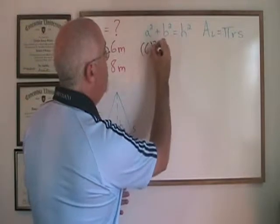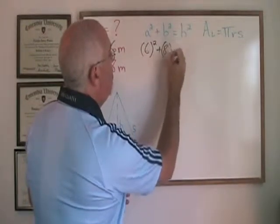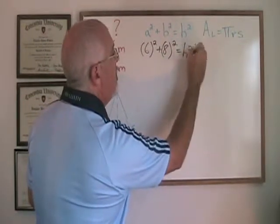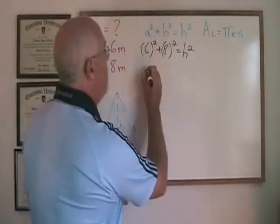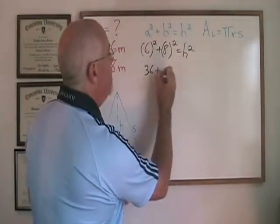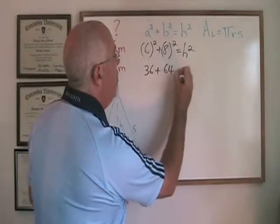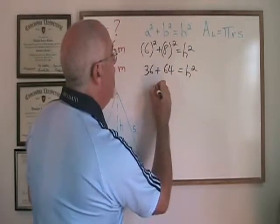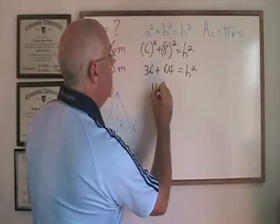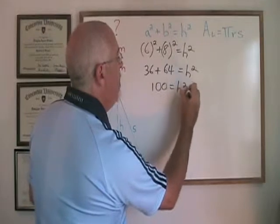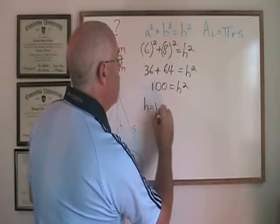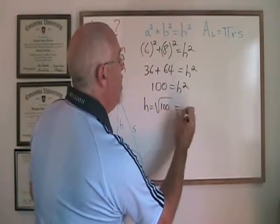So I plug these in and we will solve for the hypotenuse. Six squared is 36. Eight squared is 64. So 36 plus 64 is 100.